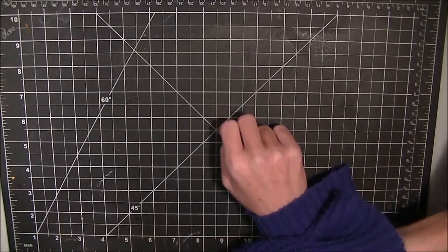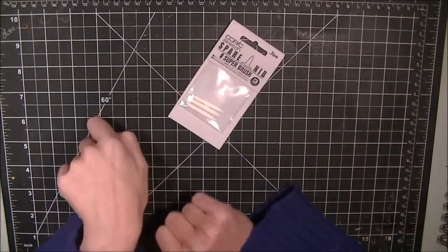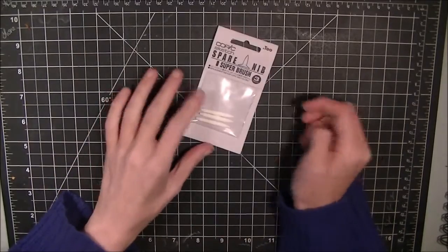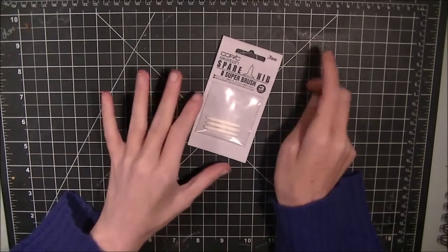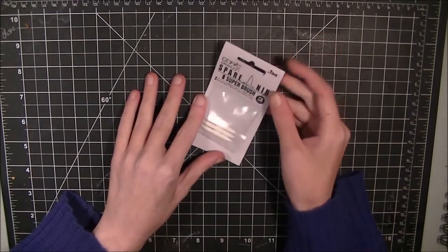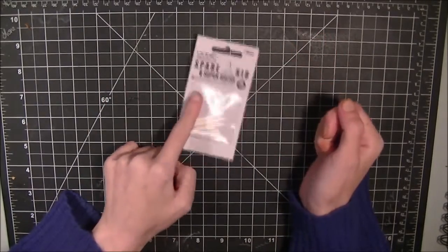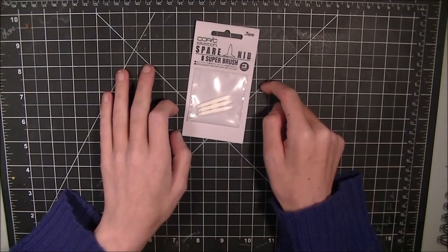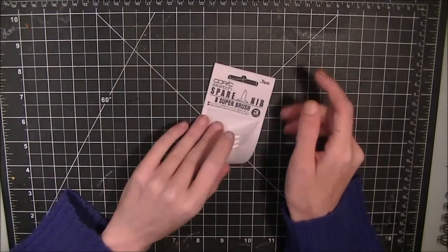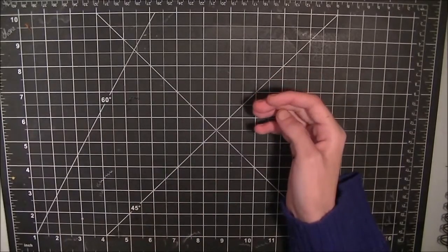The first thing I got was some Copic spare brush nibs because they are almost always out online. I ended up having to go to Hobby Lobby, and my local Hobby Lobby actually sold these. This was the last little set that they had, so I was totally snagging that.